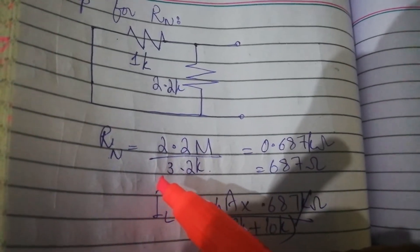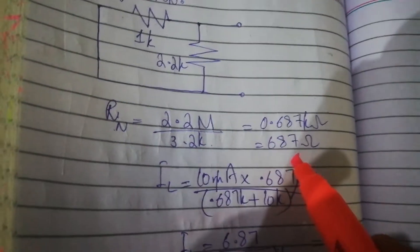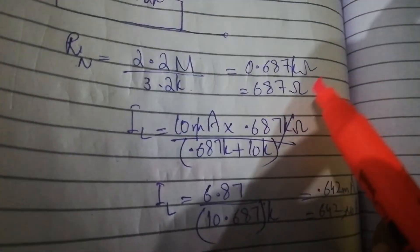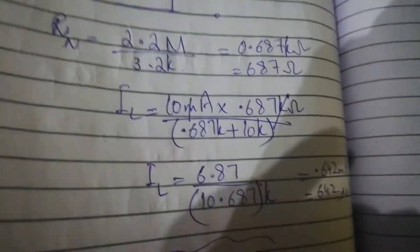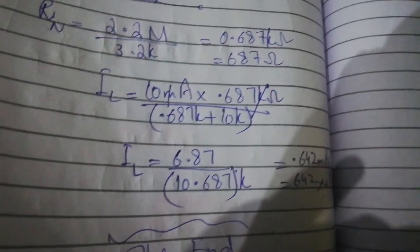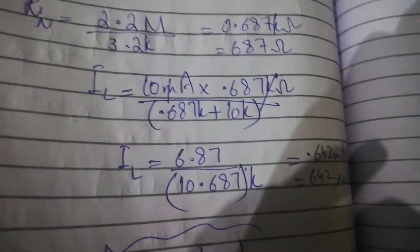2.2 megaohm and 3.2 kΩ, that is 687 ohms or 0.687 kΩ. Now we will put values in the formula to get the load current value. We need to make a Norton equivalent circuit.